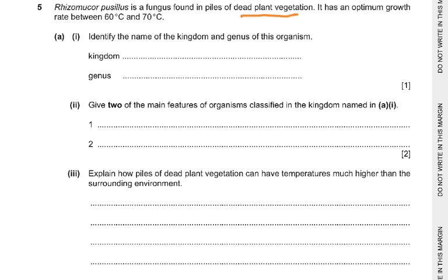It has an optimum growth rate between 60 and 70 degrees Celsius — the fungus has enzymes with an optimum temperature of between 60 and 70 degrees Celsius. Identify the name of the kingdom and genus of this organism. The name of the kingdom is Fungi. The genus comes first, so that will be Rhizomucor, and the R has to be capital.